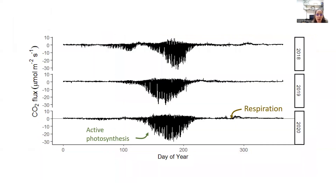The data from the eddy covariance method look like this: these are CO2 fluxes over the course of the year. When the systems are taking up a lot of CO2 from the atmosphere during the growing season, those are shown by the large spikes downward — that's the period of most active photosynthesis. Outside of the growing season, fluxes tend to be small but positive, representing CO2 emitted by soil microbes and through the decay of plant matter.